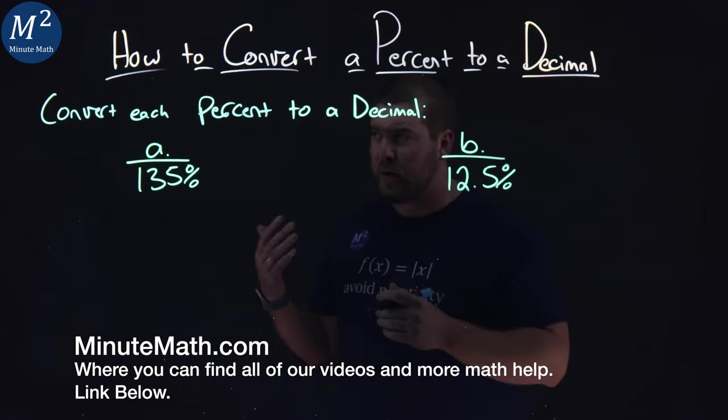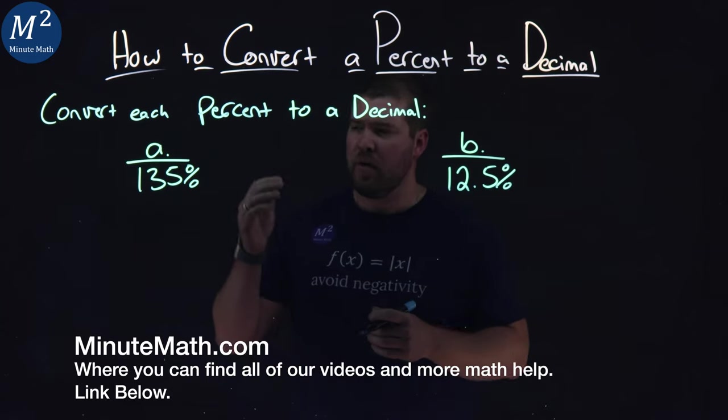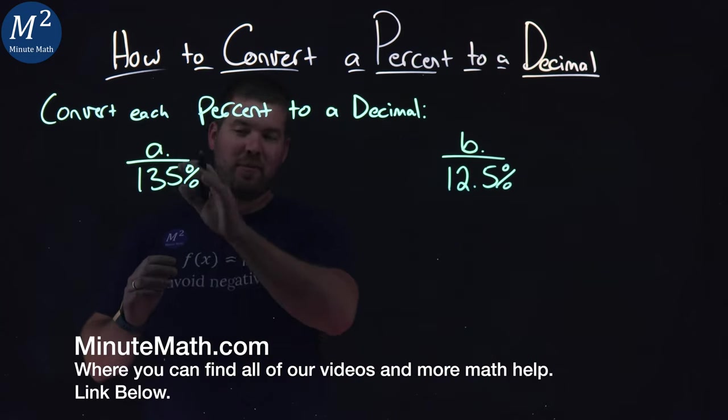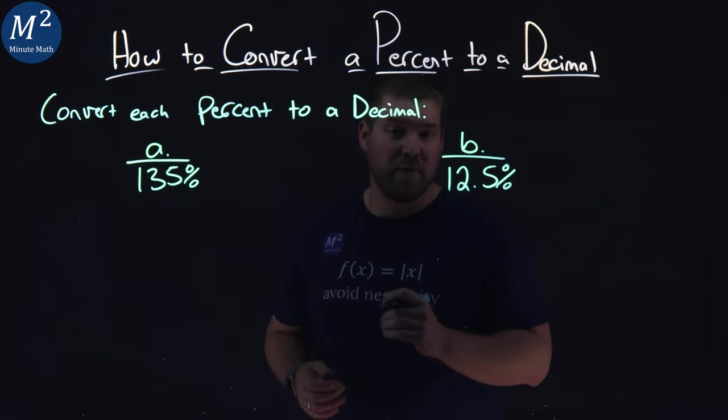We're given this problem right here. Convert each percent to a decimal. We have A as the first one, 135%, and part B is 12.5%.